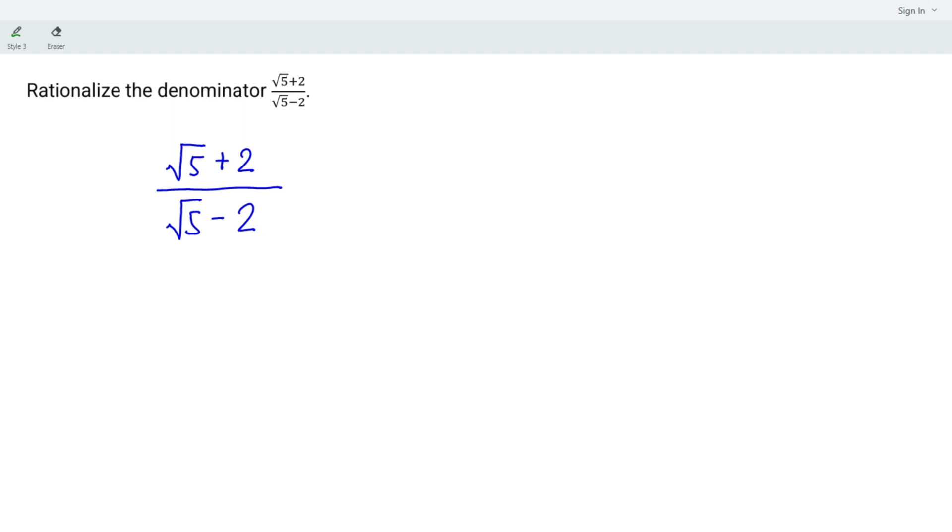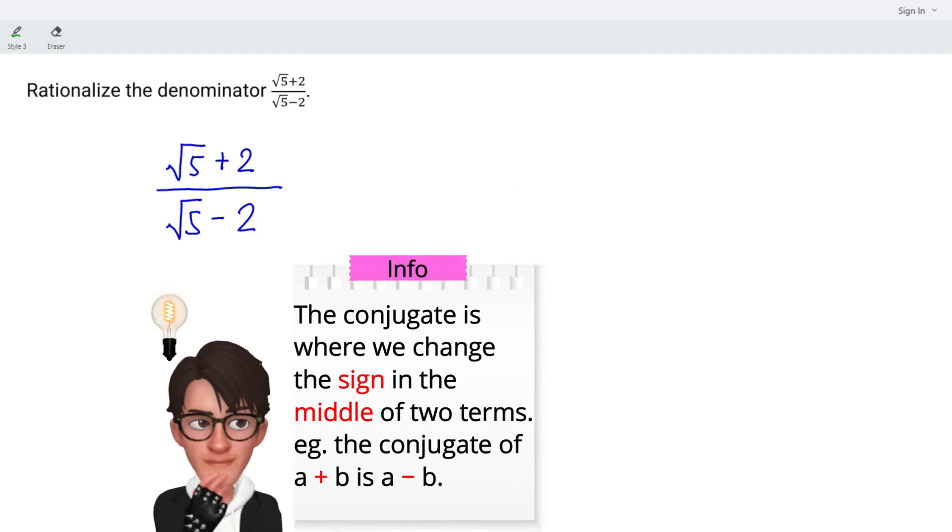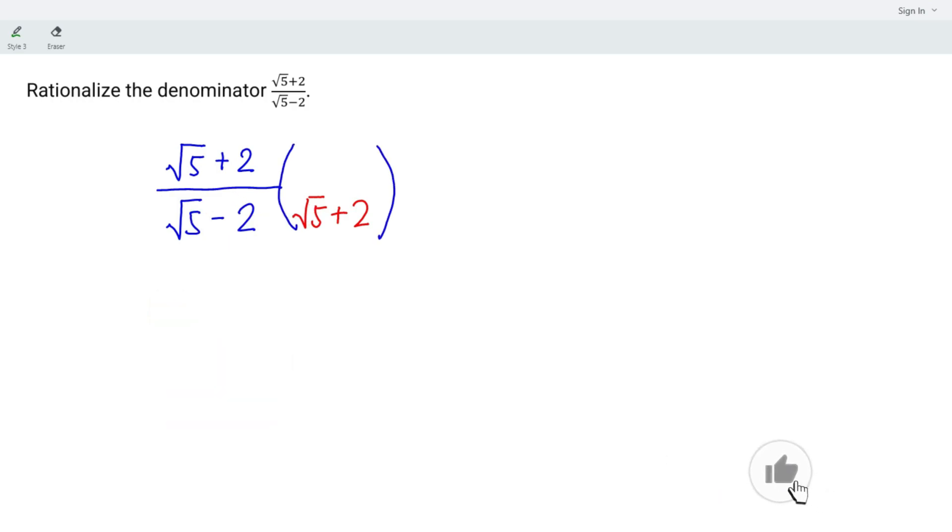To rationalize the denominator, let's apply the conjugate, which means that we should change the sign in between these two terms. That is, minus become plus. However, we should not change the value of this fraction, which means that we should multiply exactly the same value to the numerator.